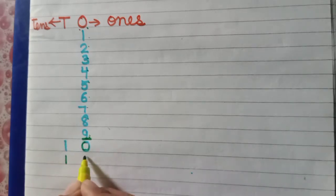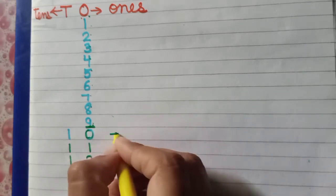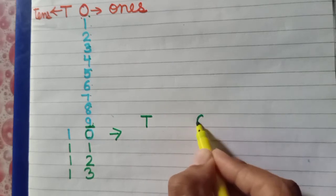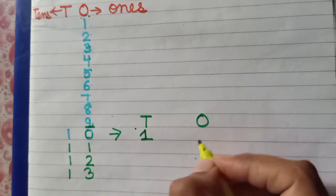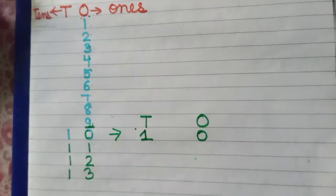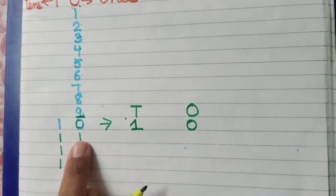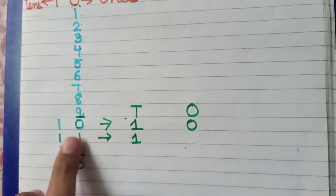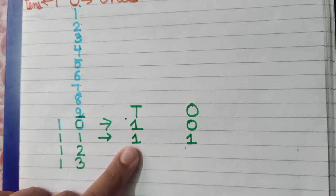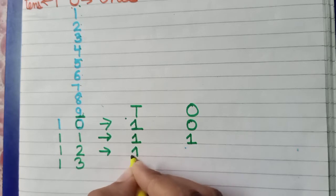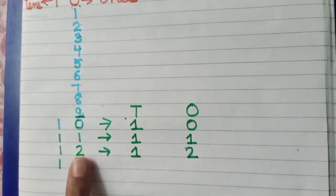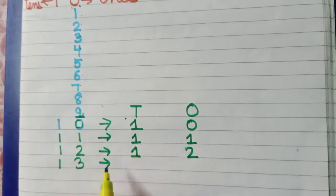If we are writing ahead: one-one is eleven — one tens and one ones. One-two is twelve — one tens and two ones. One-three is thirteen — one tens and three ones. Aise hum poori counting likhte hain. So the T column means tens and the O column means ones.